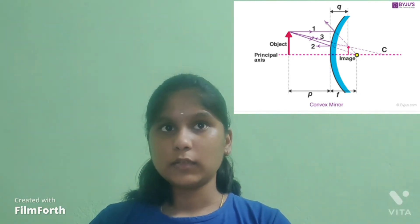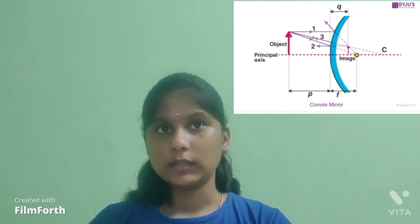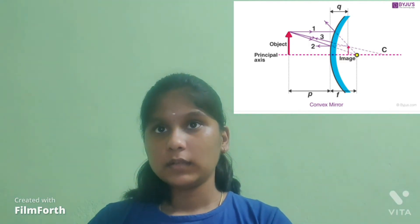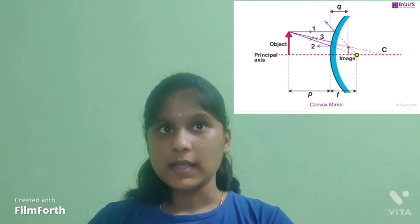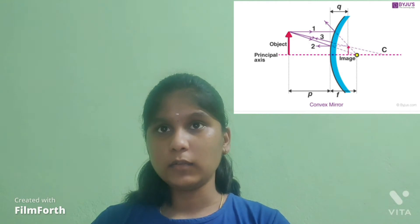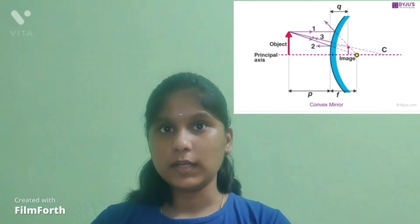Both the center of curvature and the focal point are located on the side of the mirror opposite the object. As the focal point is located behind the convex mirror, the mirror is said to have a negative focal length value.